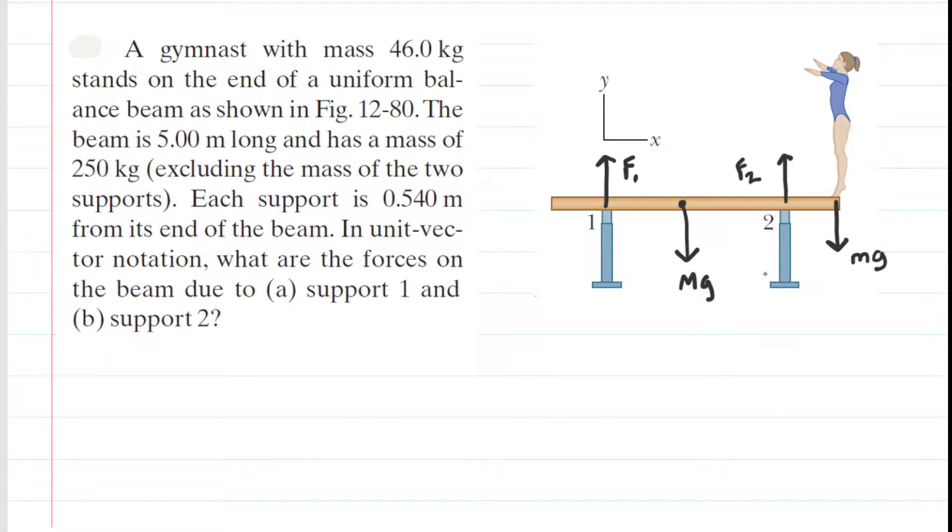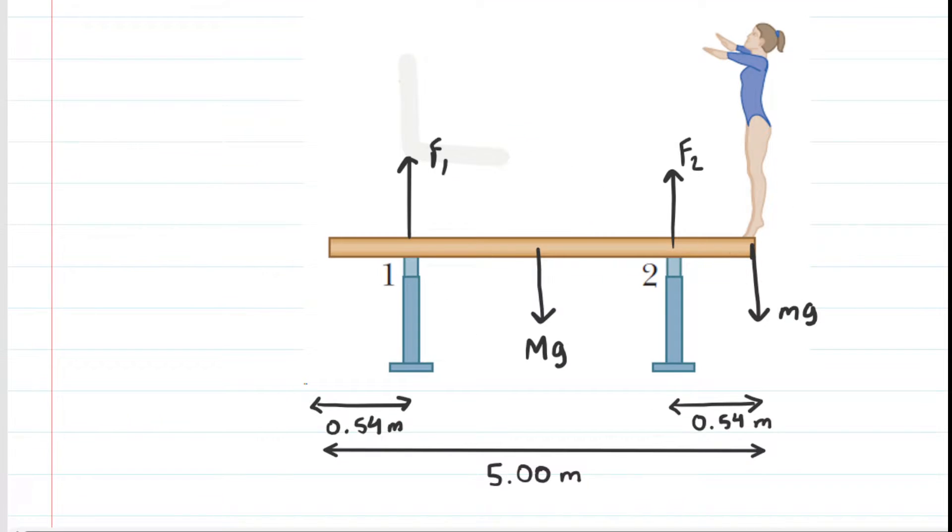Our next step is to label some distances on the beam. The distances illustrated in the picture are given directly in the problem. We have the length of the beam is 5 meters and then the distance of each support to the end of the beam was 0.54 meters. So now we have all the forces and the distances accurately labeled. Our next step is to select a pivot point because we're going to be applying the principles of torque to solve this question.